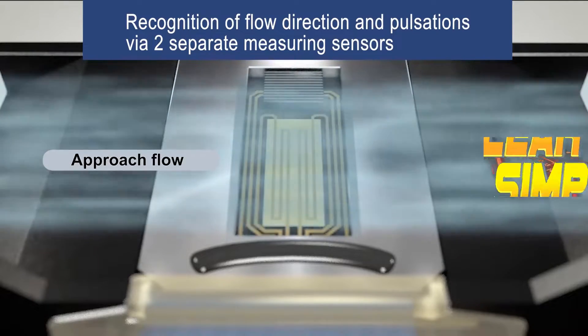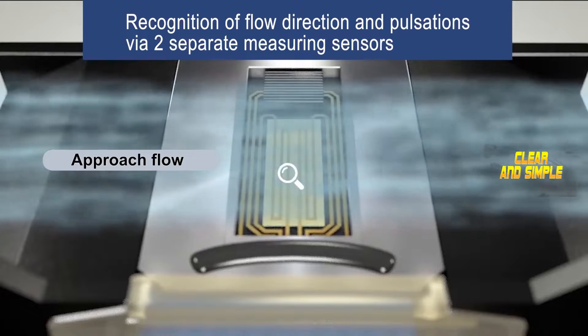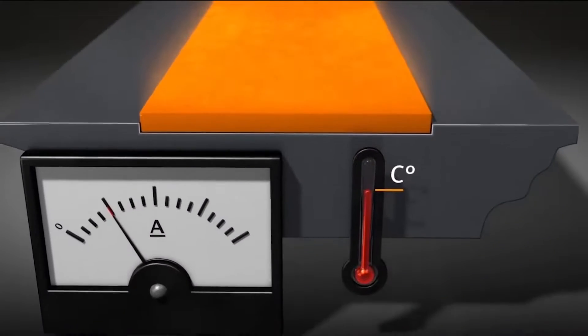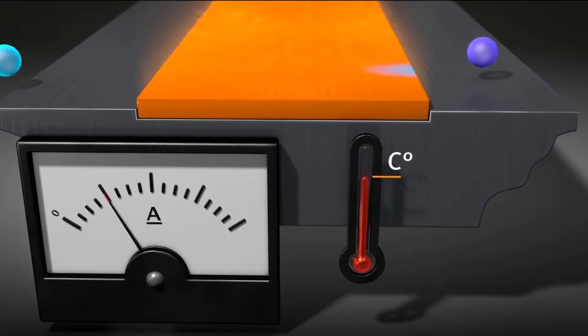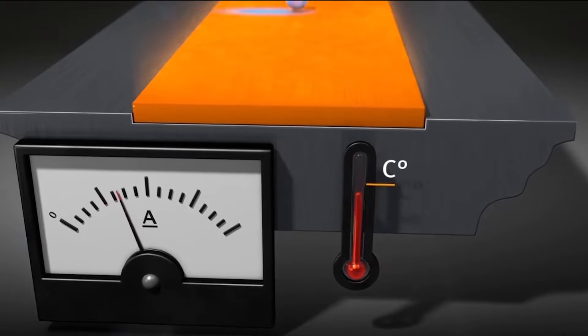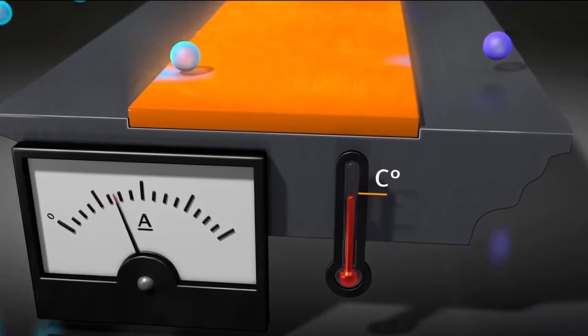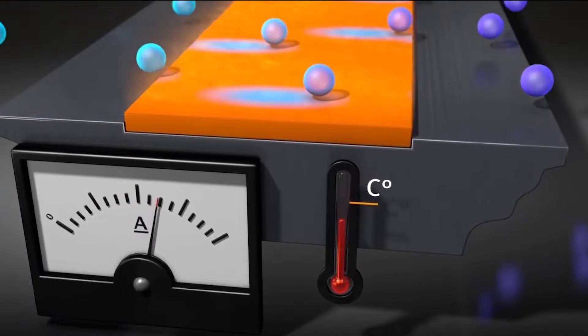The MAF sensor utilizes the concept of the hot wire/film principle, where the wire or film is heated to a specific temperature. As air flows over the wire or film, it cools it down. The MAF sensor measures the cooling effect on the wire or film caused by the airflow.